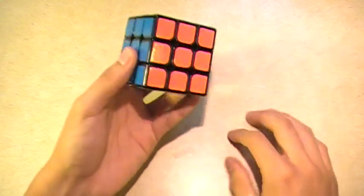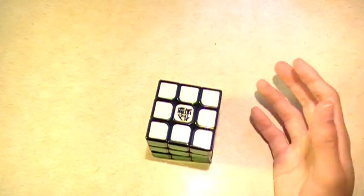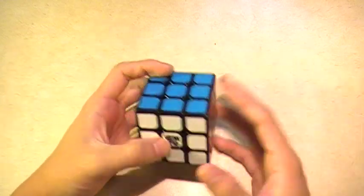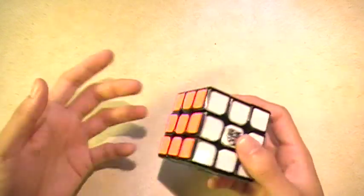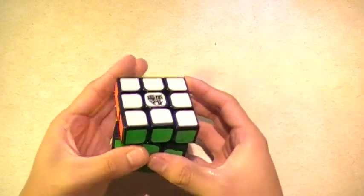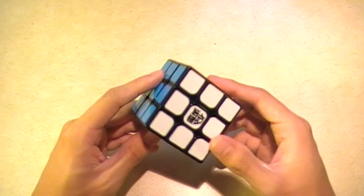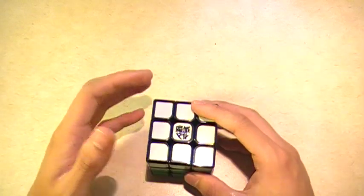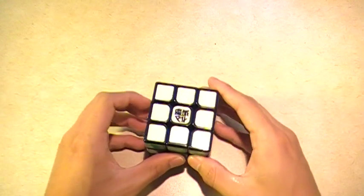So yeah, that's pretty much the solve on the Aolong V2. So overall, as I said before, I really highly recommend this cube to anyone basically, even slower cubers, because the cube is a perfect speed. It can be either slow, fast, smooth, crunchy. It basically can be anything, honestly. Highly recommend this cube, guys. This is my review of the Aolong V2. I hope you guys enjoyed. Thank you guys for watching. Hope you guys have a great day. Bye.